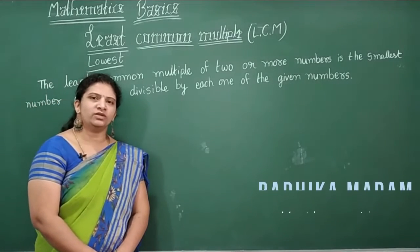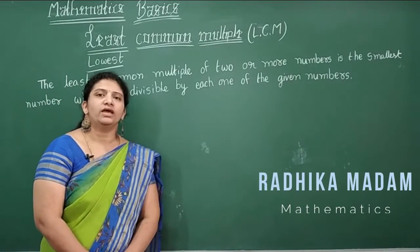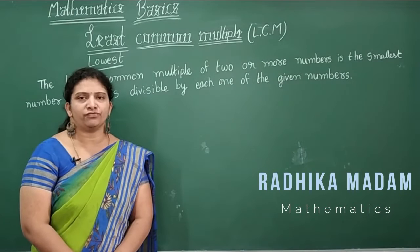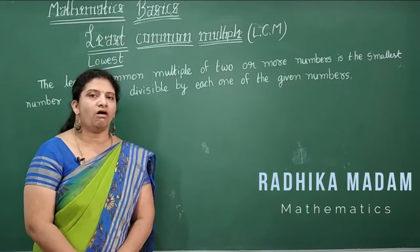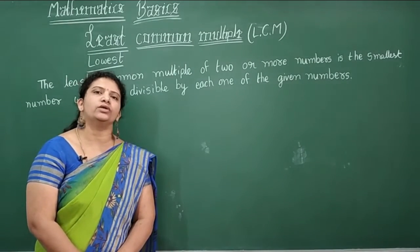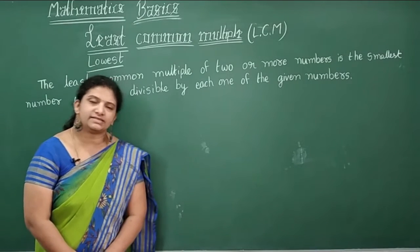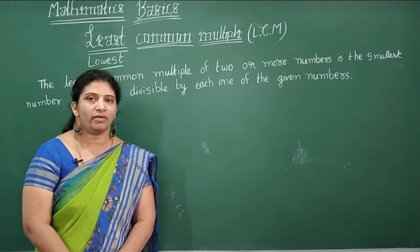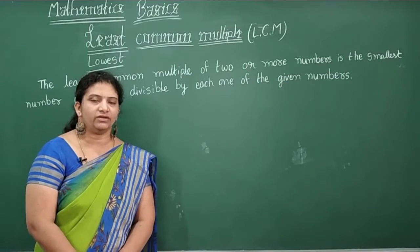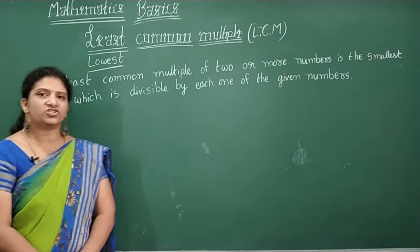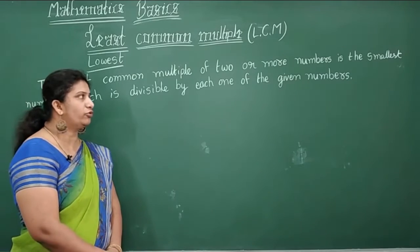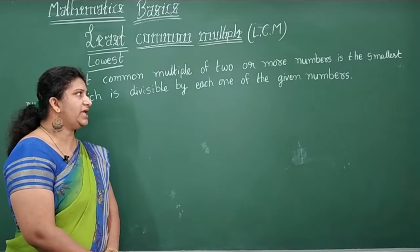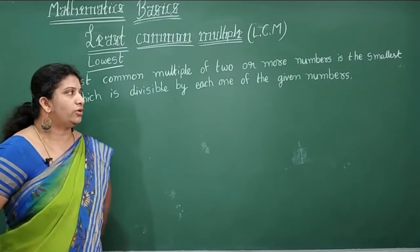Hi, welcome to your home school. This is your next session on LCM. In our previous session, we completed how to find HCF of two or three numbers. Now in this session we are going to learn about LCM — what is LCM? It is the Least Common Multiple, or we can say Lowest Common Multiple. The least common multiple of two or more numbers is the smallest number which is divisible by each one of the given numbers.